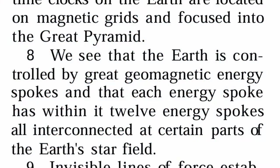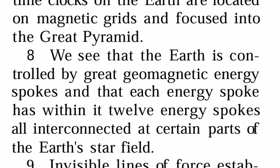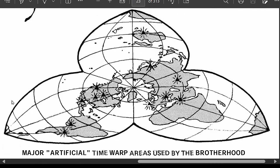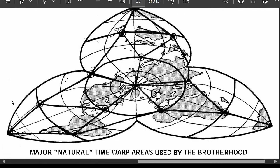We see that the Earth is controlled by great geomagnetic energy spokes, and that each energy spoke has within it 12 energy spokes, all interconnected at certain parts of the Earth's star field. Invisible lines of force establish a systematic pattern for the formation of the particles of matter and anti-matter in the programming and control of individual intelligence.